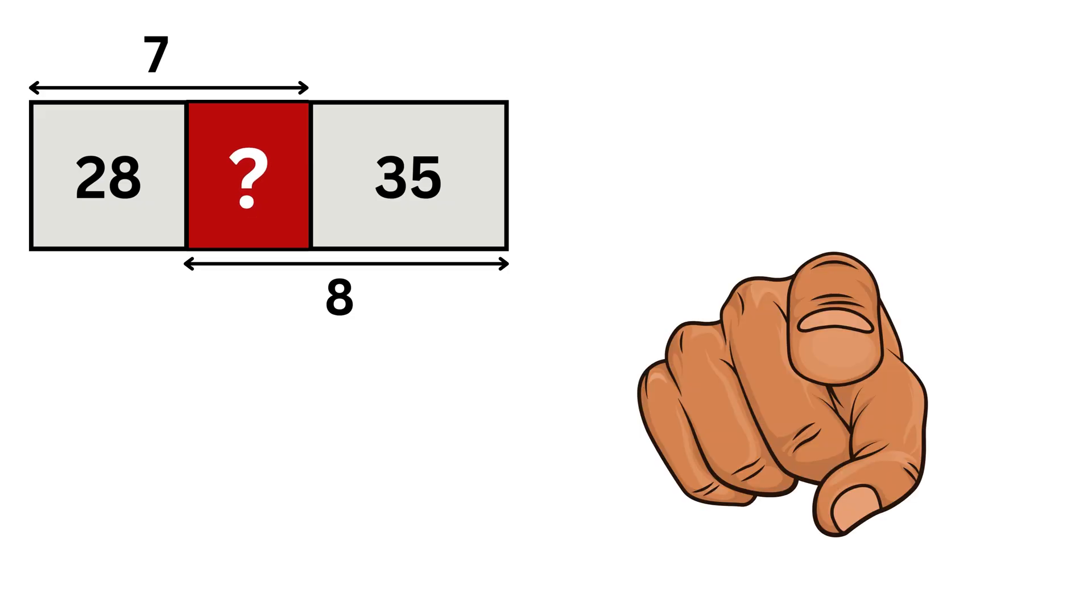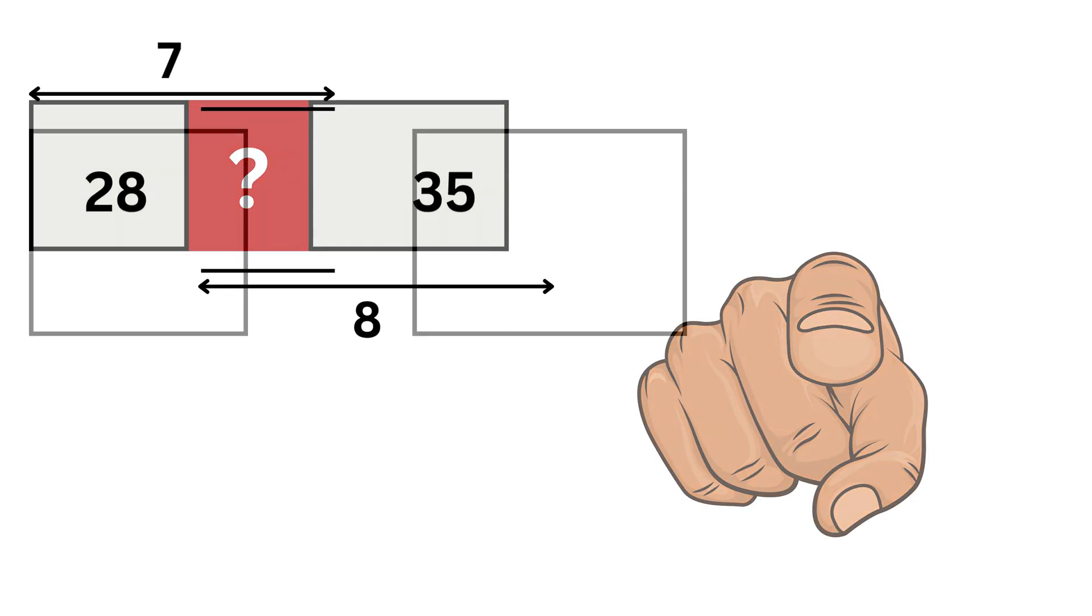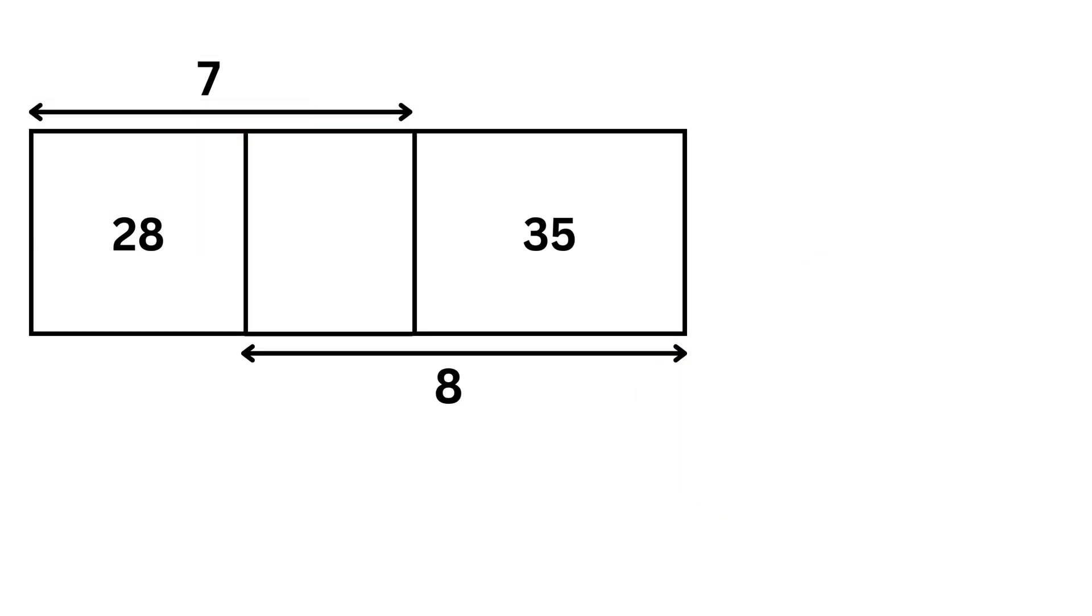So, can you solve it? Let's start by labeling the figure. Let the middle rectangle have a length of x units and a width of y units. Since all three rectangles are arranged in a straight line, the width y will be the same for all of them. So all of them will be y.